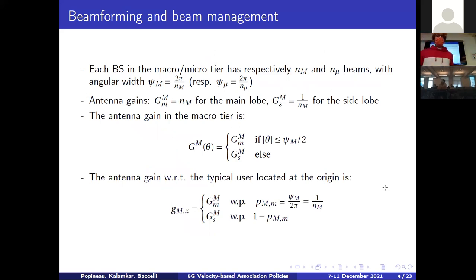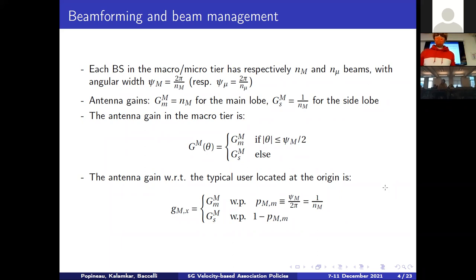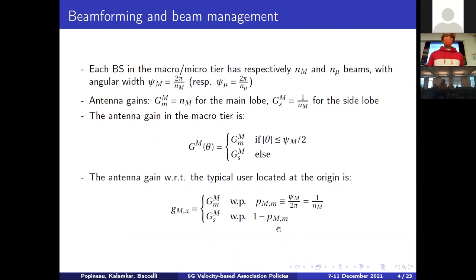Mathematically speaking, when we are located at the origin, we assume the direction of the main lobe for each base station is i.i.d. with a uniform distribution — specifically, the distribution given that the antenna is pointing towards the origin of the network. This gives us the distribution for the antenna gain witnessed by the typical mobile user at that location.